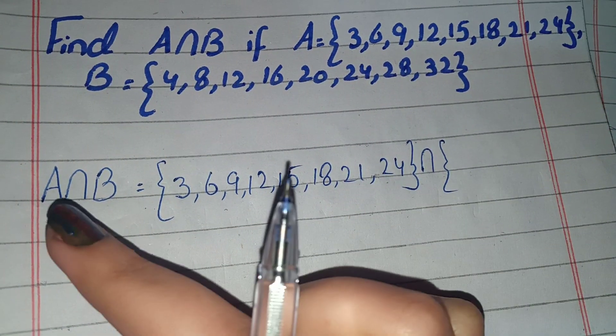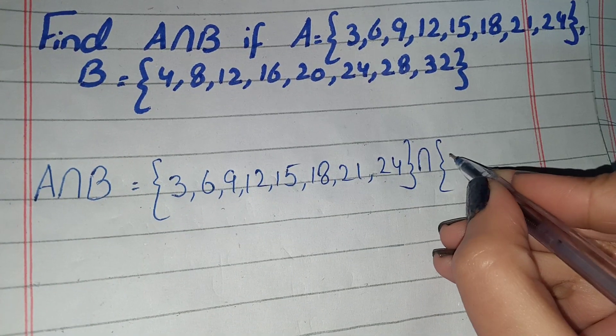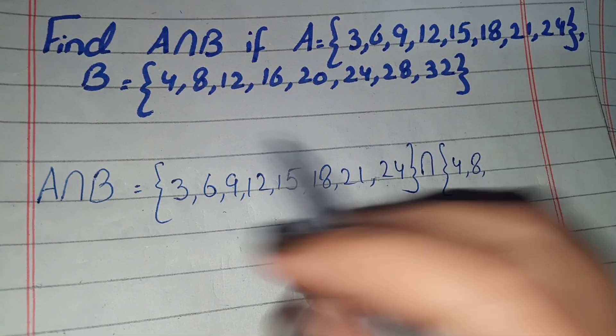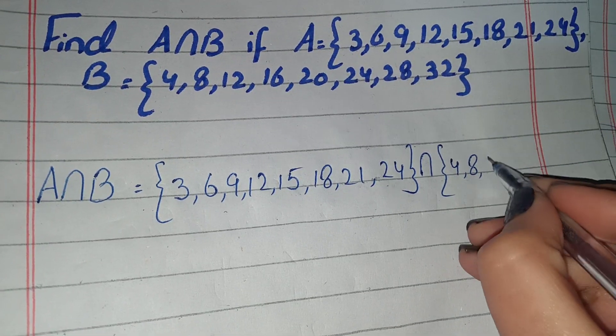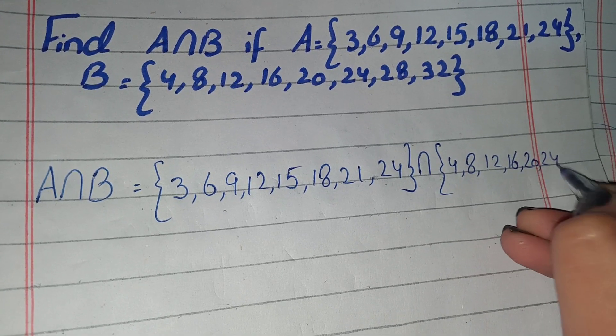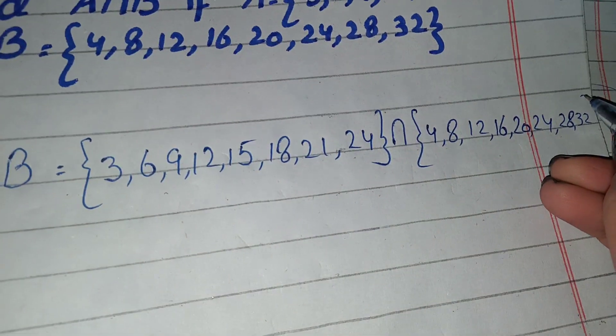For B set elements we write 4, then 8, then 12, then 16, then 20, 24, 28, and 32, and this bracket closed.